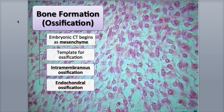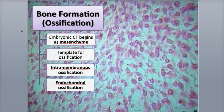Bone forms through a process called ossification, also called osteogenesis, which means the making of bone. Bones form during embryological and fetal development, grow throughout our early childhood until adult bone sizes are achieved in our late teens or early 20s, form during the remodeling process as old bone is continuously replaced with new bone, and growth occurs during fracture repair.